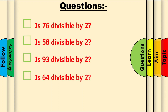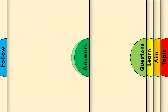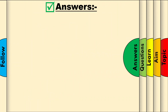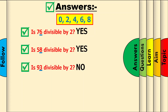Before looking at the divisibility rules for 5, pause the video and answer these questions. Let's go through some answers using our secret that we just learnt. Look at the last digit of 76, which is 6. 6 is one of our special numbers — 0, 2, 4, 6, and 8 — so the answer is yes. Using the same method, here are the following answers.